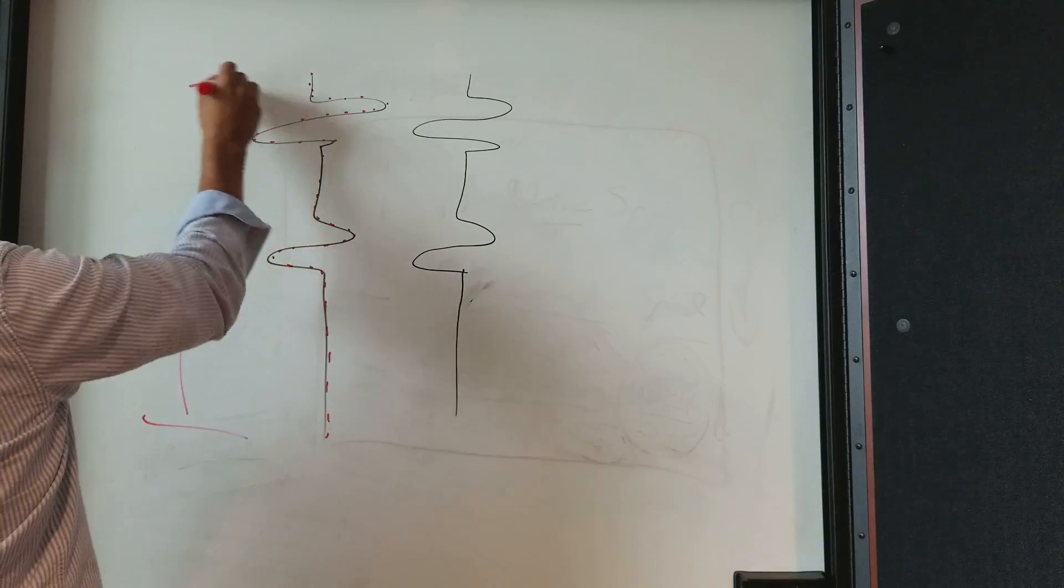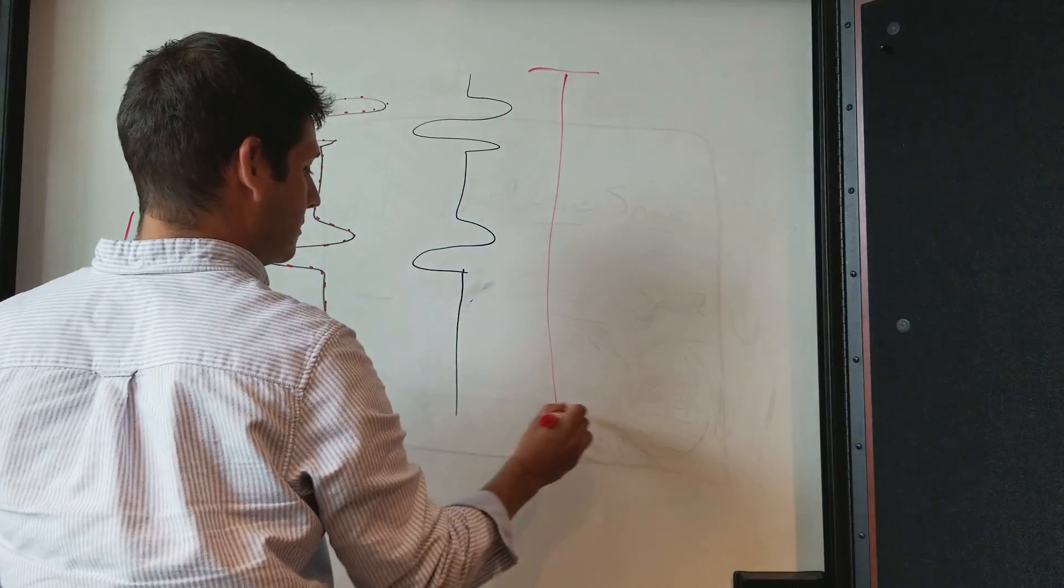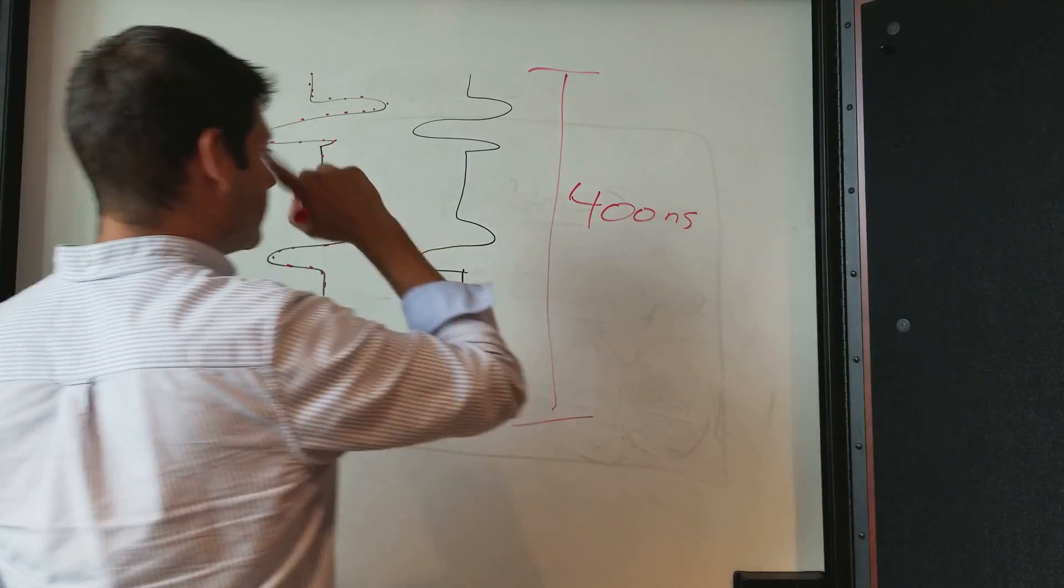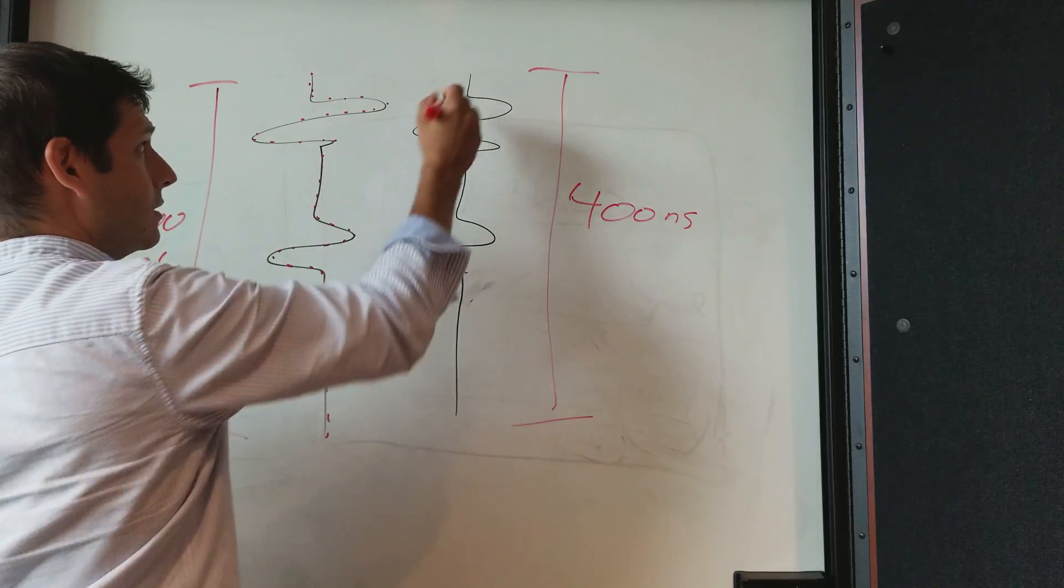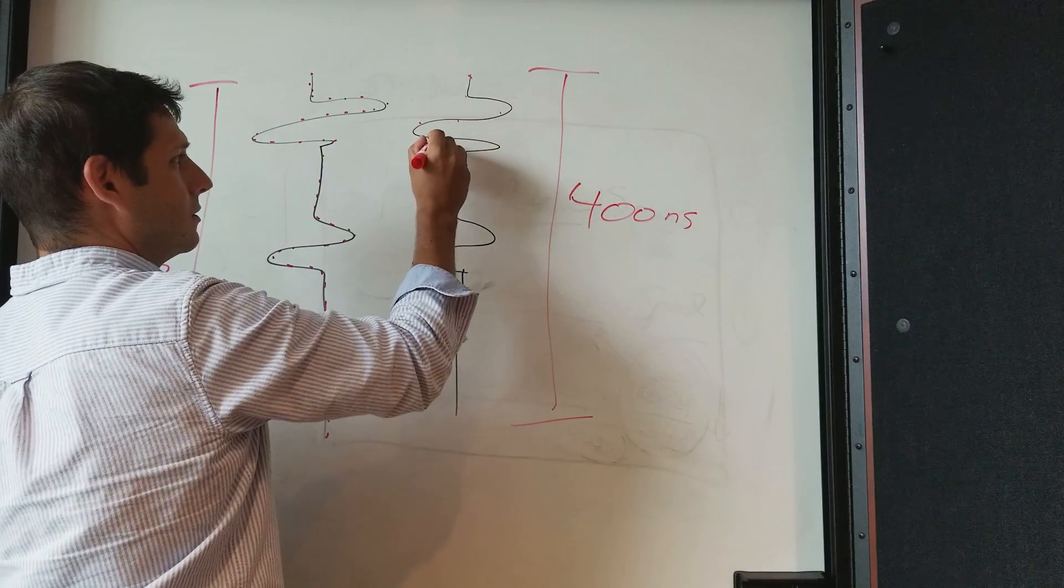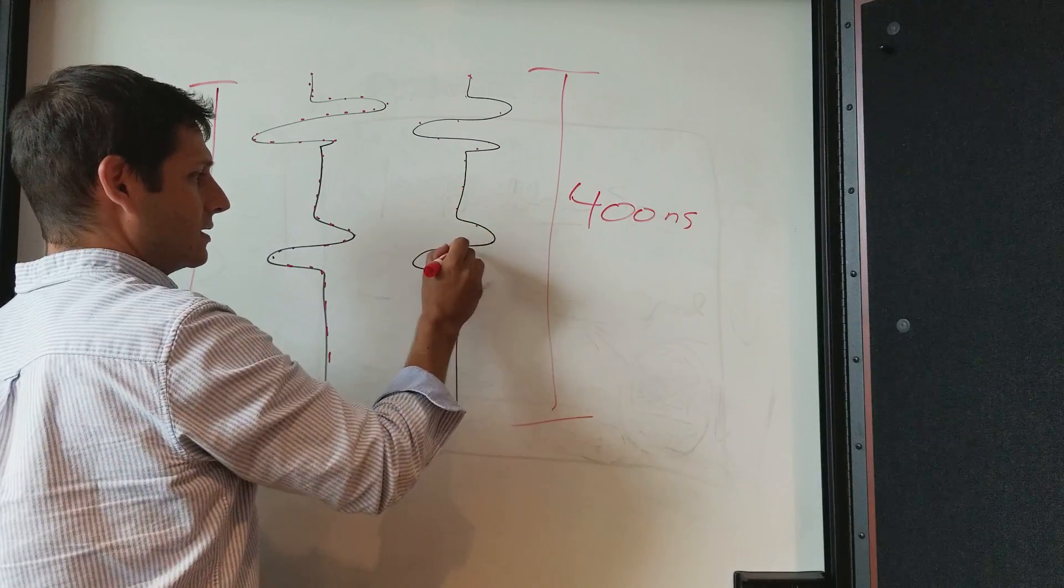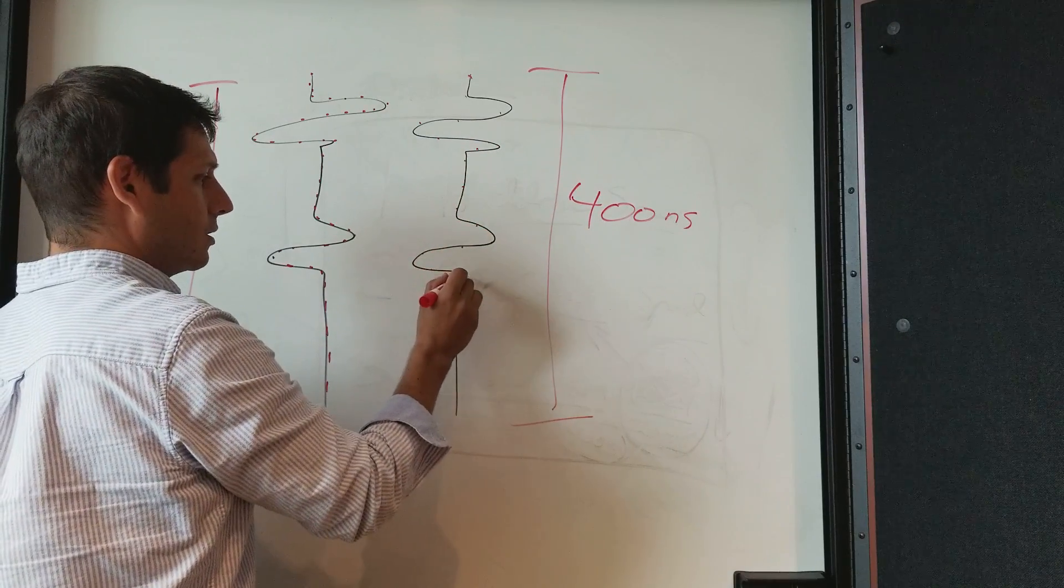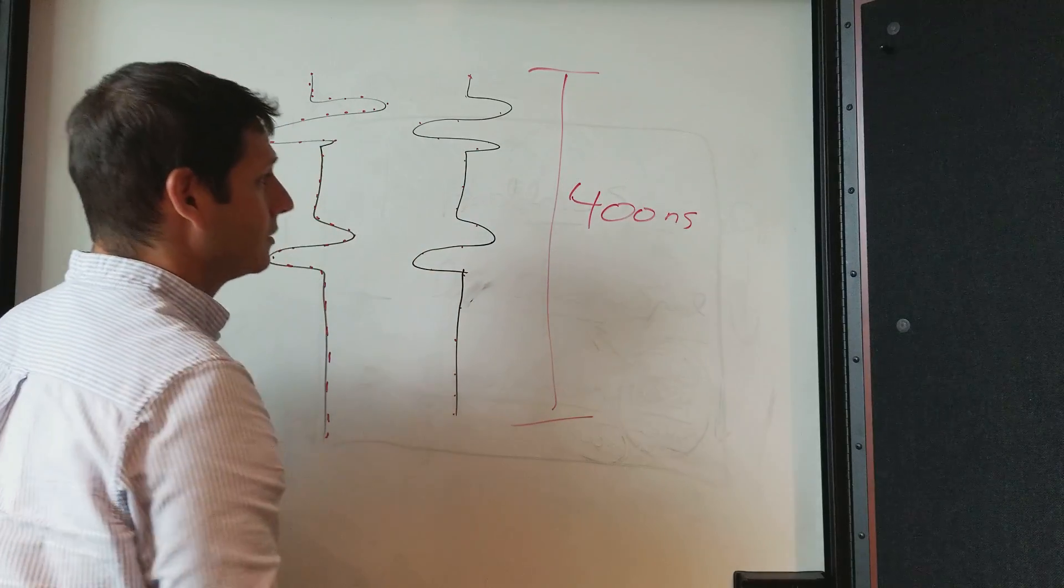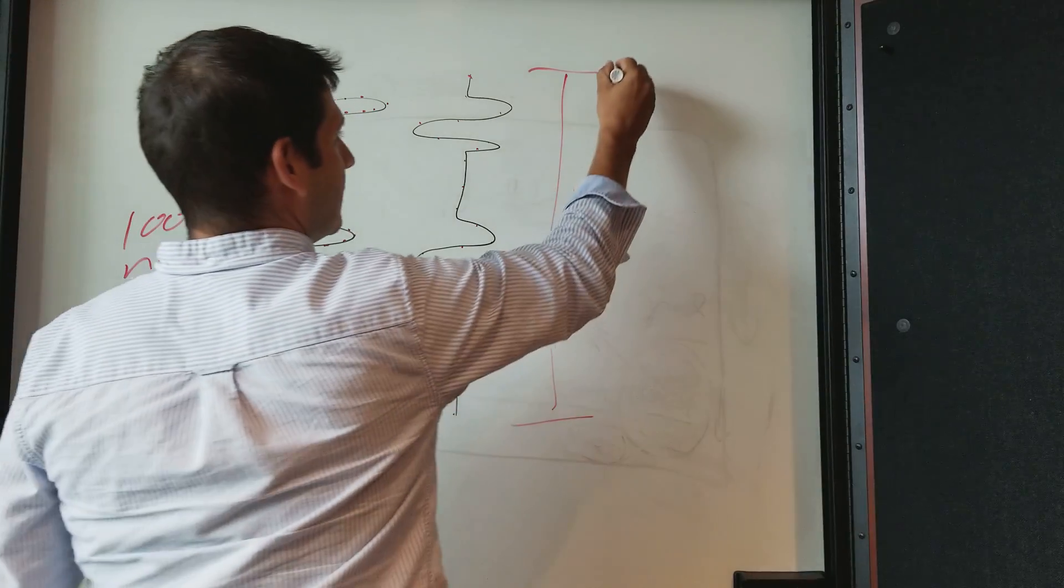The problem is if you spread it out and let's say that this is 100 nanoseconds, but this is 400 nanoseconds. We get the same amount of points, but spread out much further. And what's the result? What's the result in this case?